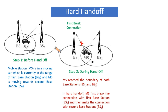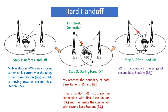Step 2 — during handoff: the mobile station has reached the boundary of both base stations BS1 and BS2. In hard handoff, the mobile station first breaks the connection with the first base station BS1 and then makes the connection with the second base station BS2. That's why hard handoff is called break before make. Step 3 — after handoff: the mobile station is now in the range of the second base station BS2.